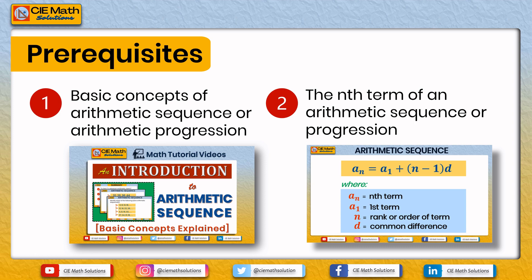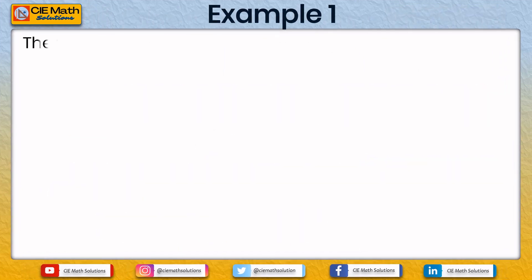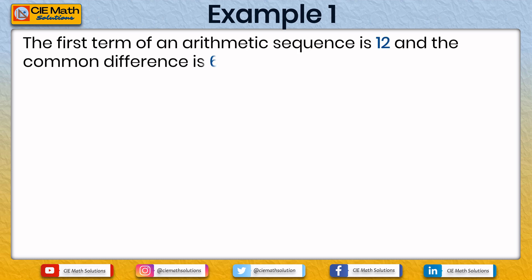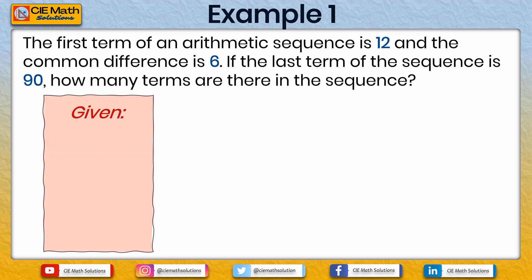Now let us use these prerequisite concepts in finding the number of terms of an arithmetic sequence or progression given its first term, last term, and common difference. For example, the first term of an arithmetic sequence is 12 and the common difference is 6. If the last term of the sequence is 90, how many terms are there in the sequence? Let us summarize the given data: a1, the first term, is 12; an, the last term, is 90; and d, the common difference, is 6.